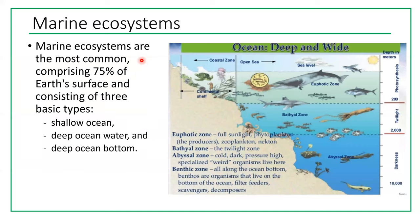Marine ecosystems are the most common, comprising 75 percent of Earth's surface, and consist of three basic types: shallow ocean, deep ocean, and deep ocean bottom. The amount of sunlight and food resources varies as we go deeper, and we expect to see different flora and fauna in different parts of the ocean based on depth and distance from shore.